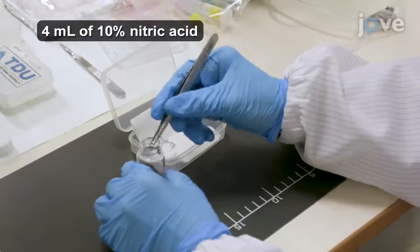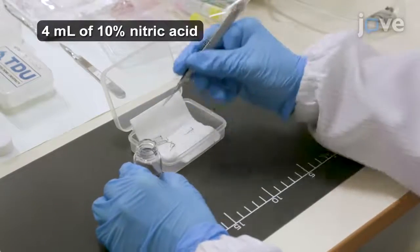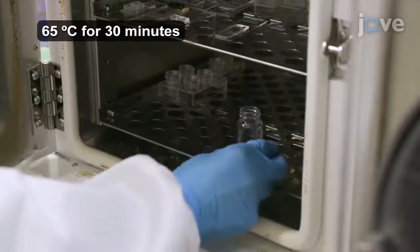Have ready 4 milliliters of 10% nitric acid and immerse the pins in it. Then place the container in a 65 degrees Celsius oven for 30 minutes.